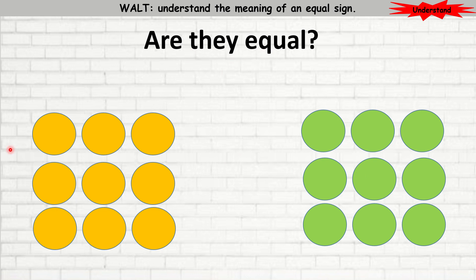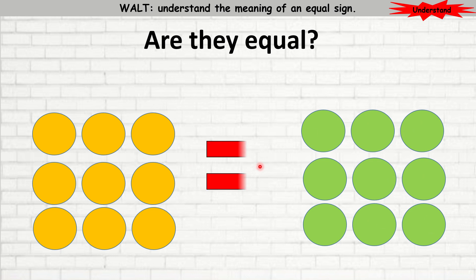Are they equal? Again, here I am going to count the number of circles and see if they are equal or not. I have 9 circles on this side, and on the right-hand side I also have 9. So, 9 is equal to 9. Are they equal? Yes, they are equal. 9 is equal to 9.